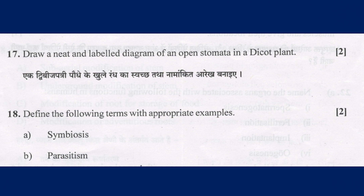Define the following terms with appropriate examples — symbiosis and parasites. Symbiosis is a term describing any relationship or interaction between two dissimilar organisms. The specific kind of symbiosis depends on whether either or both organisms benefit from the relationship.